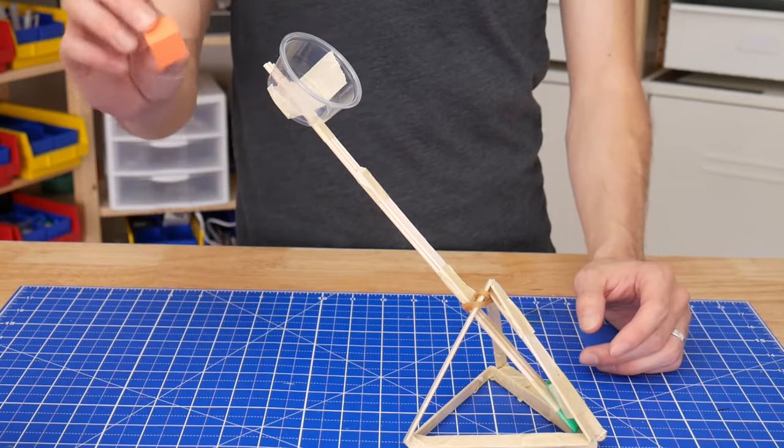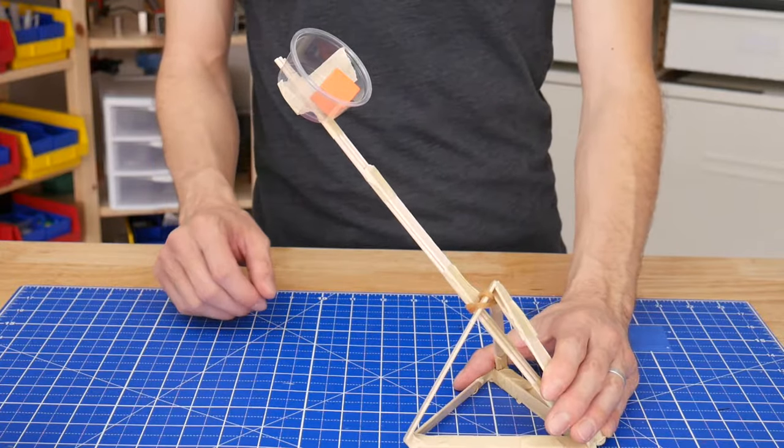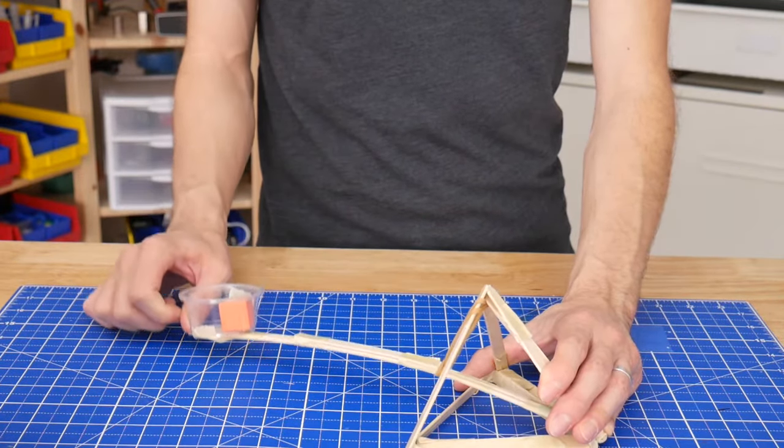To launch the catapult, first load your projectile of choice, then use one hand to hold down the front of the frame while using the thumb of the other hand to pull down the catapult arm and then just let go.